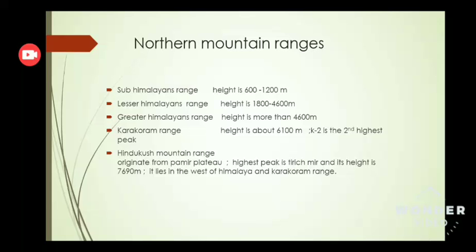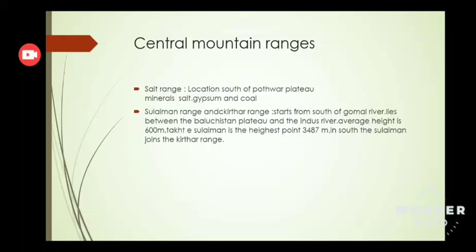So this is the detail of northern mountain ranges. Northern mountain ranges are divided into 5 mountain ranges: first, the Sub-Himalayan range; second, the Lesser Himalayan range; third, the Greater Himalayan range; fourth, the Karakoram range; and the last one is the Hindukush mountain range.